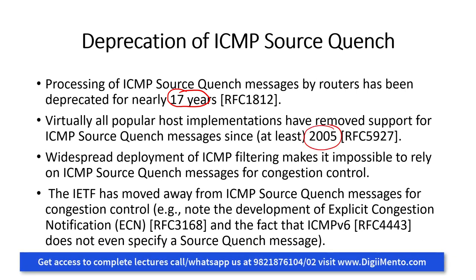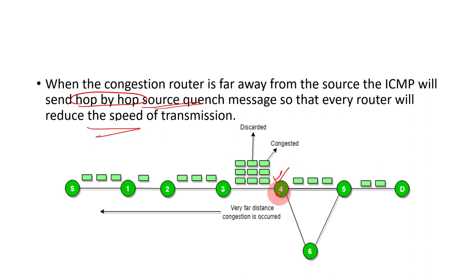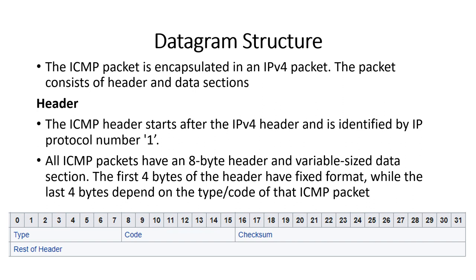It has been approximately 17 years that the ICMP source quench message has been deprecated, with its implementation and support removed from 2005 onwards. If the congestion is happening at a very far place — when the congesting router is far away from the source — ICMP will send a hop-by-hop source quench message so that every router along the path will reduce the speed of transmission one by one.